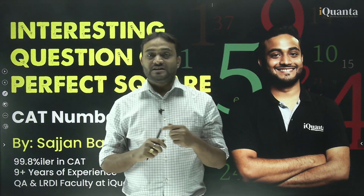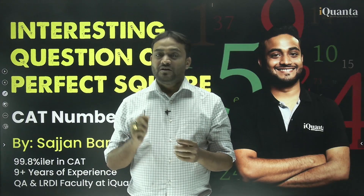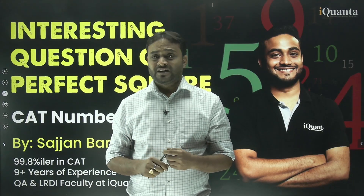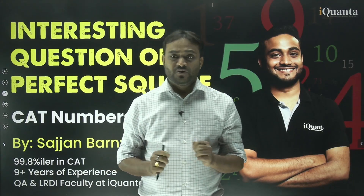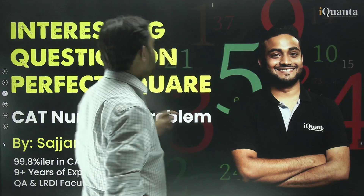Hello everyone, how are you doing today? We are going to discuss a CAT previous year question, and that question is based on the basic algebraic identity which is (a + b) whole square. Let's see.